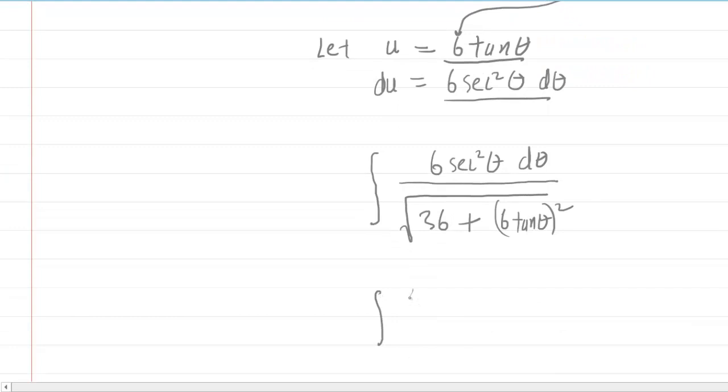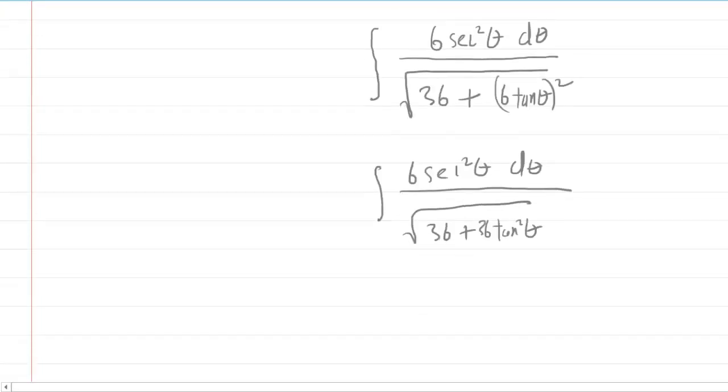Next thing you'll do is simplify this. The numerator right now is going to remain the same. Underneath the square root, you can go ahead and square the 6 tan theta. So you'll have 36 tangent squared of theta. And then the way that the procedure works is you're always going to be left with a greatest common factor. In this case, it's 36. So we're going to factor out a 36 underneath that square root. So you'll have 36. You'll be left with 1 plus tangent squared of theta under there.